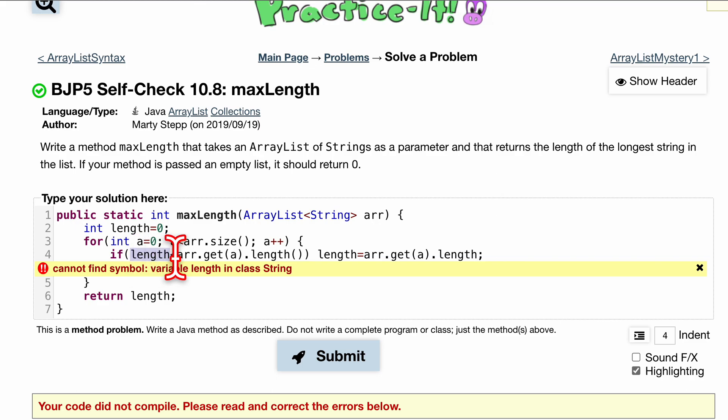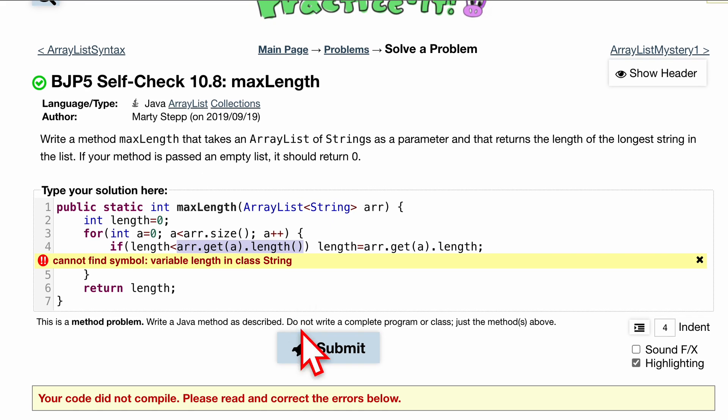We have our length, has to be less than, Array, then we have .get(a), and then we have our length right here. So let's see. This looks pretty good. Array.get(a), and then we have our .length. There doesn't seem to be anything wrong with this.